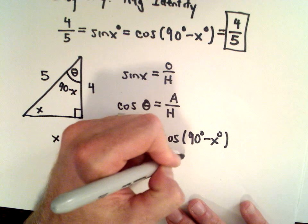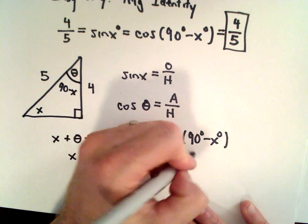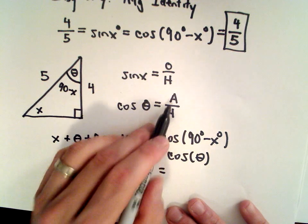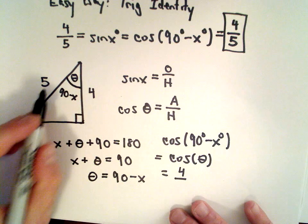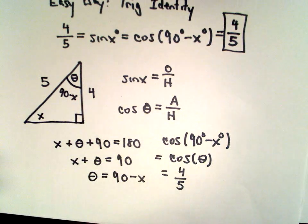That's the same thing as cosine of theta because that's how I labeled it. Cosine of theta is the ratio of the adjacent side, which is 4, to the hypotenuse, which is 5. So again we get that same value, 4 over 5.